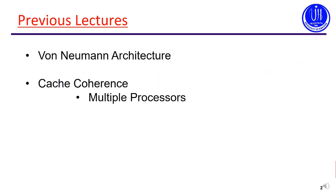Quick recap of previous lectures: we talked about von Neumann architecture and its alternative architectures. We also studied cache coherence, in which multiple processors are executed in parallel and each processor has its own cache, so the data among different caches typically suffers from data inconsistency issues — which is called cache coherence. We then studied different writing algorithms to handle these issues. Cache coherence, which we covered in the last lecture, is very important.